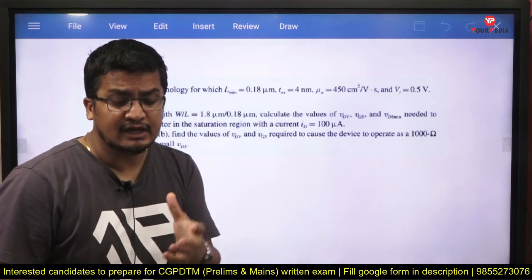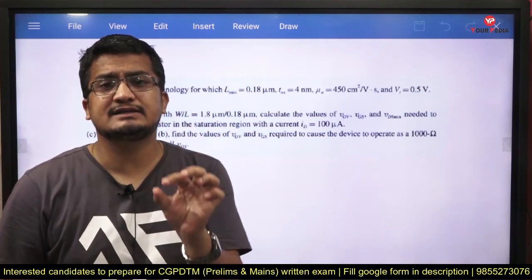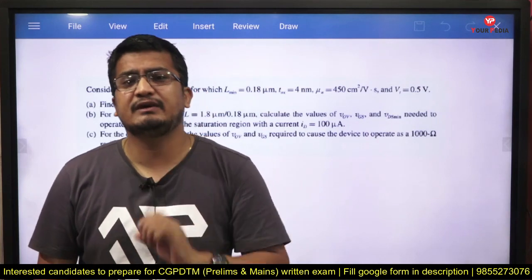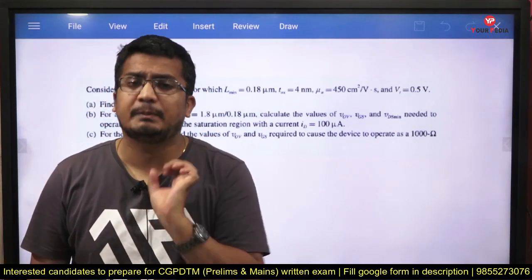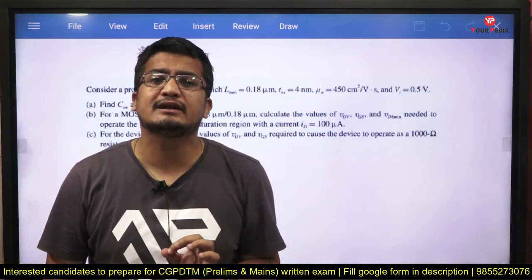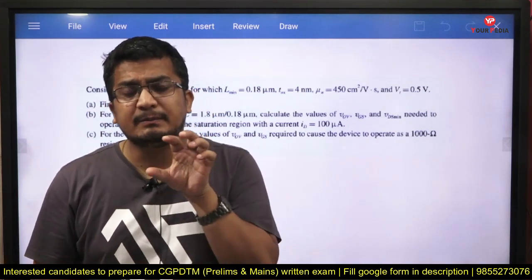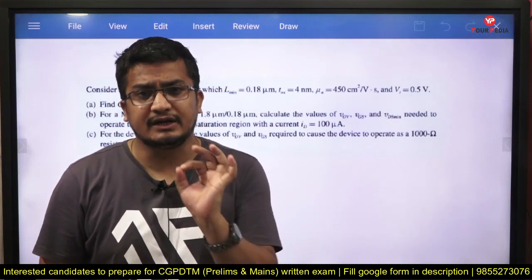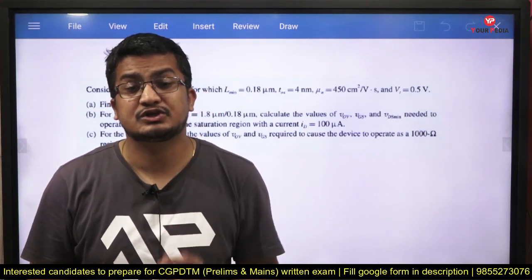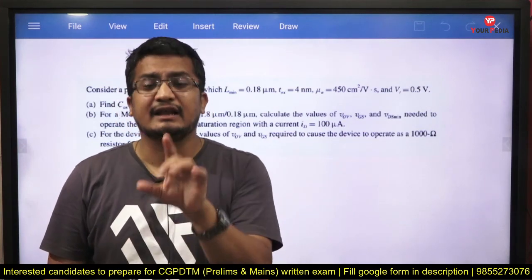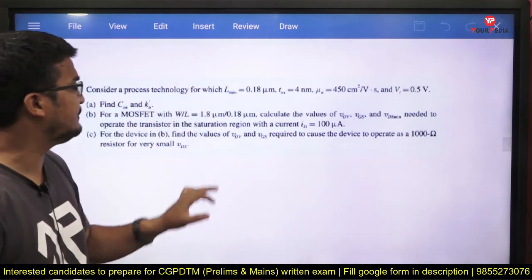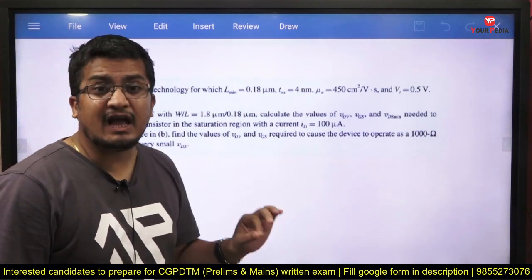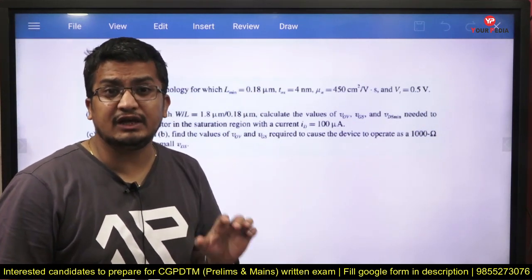The second MOSFET question asks: for the device in the figure, find the overdrive voltage and VGS required to cause the device to operate as a 1000-ohm resistor for very small values of VDS. If you draw the ID versus VDS characteristics, for very small VDS you can treat the MOSFET as operating in the linear or ohmic region, where it behaves as a resistor whose value is a function of gate-to-source voltage. Only if you know this entire characteristics theory will you be in a position to solve this question.